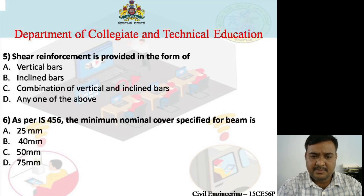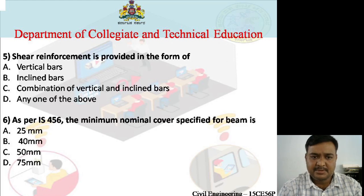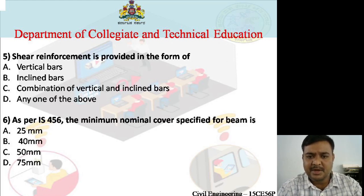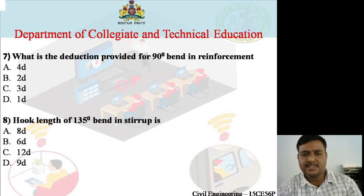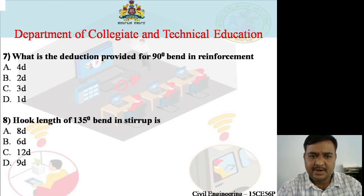MCQ 5: Shear reinforcement is provided in the form of — vertical bars, inclined bars, combination of vertical and inclined bars, or any one of the above. The right answer is D: any one of the above. MCQ 6: As per IS-456, the minimum nominal cover specified for a beam is — 25 mm, 40 mm, 50 mm, or 75 mm. The right answer is A: 25 mm. MCQ 7: The reduction provided for a 90° bend in reinforcement is — 4D, 2D, 3D, or 1D. The right answer is B: 2D.